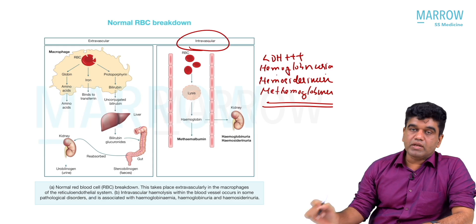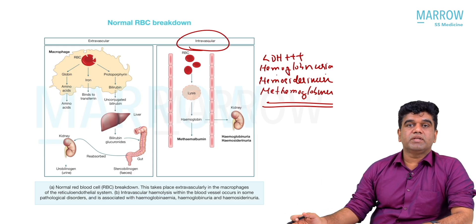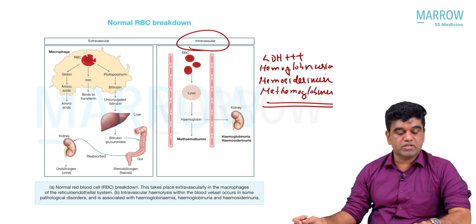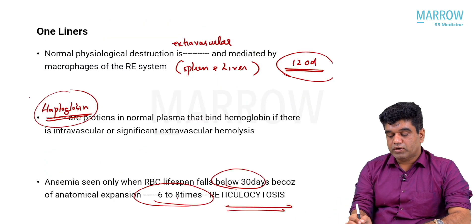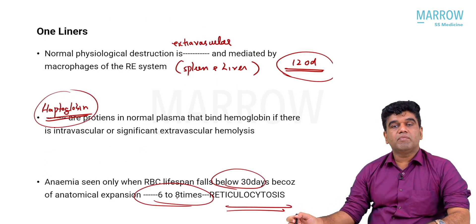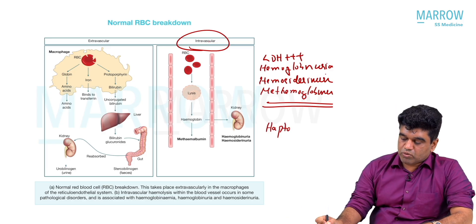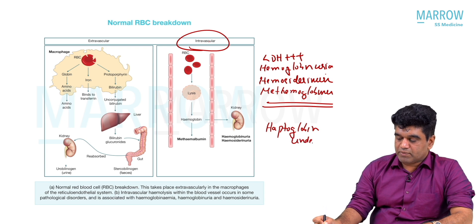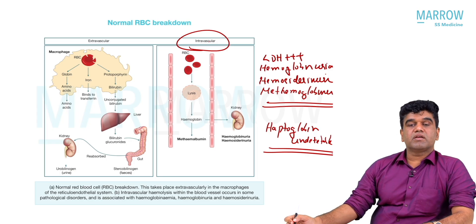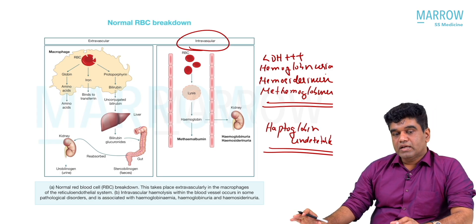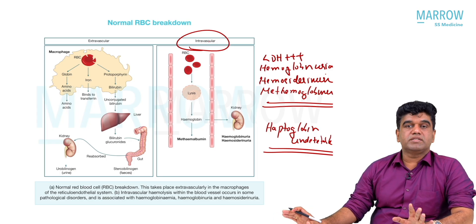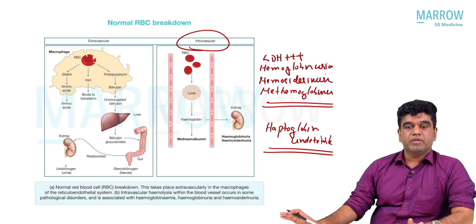Most importantly, whatever hemoglobin is released from intravascular destruction will be bound to haptoglobin, and there will come a point when haptoglobin stores get exhausted. That is why, if you check for haptoglobin, it is the most specific test — haptoglobin will be undetectable in significant intravascular hemolysis. In significant intravascular hemolysis, haptoglobin is going to be completely undetectable or zero.